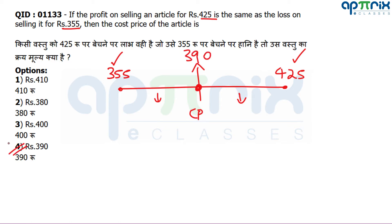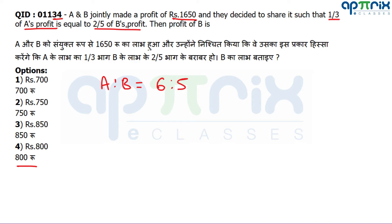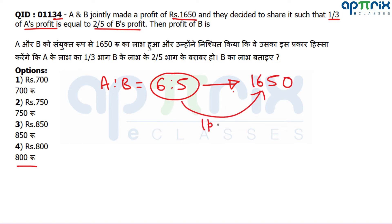Question number 34: A and B jointly made a profit of rupees 1650 and decide to share it such that 1/3 of A's profit equals 2/5 of B's profit. From this second statement we can find A:B ratio, which will be 6:5. Joint profit is 1650 over 11 parts, so 1 part = 150.